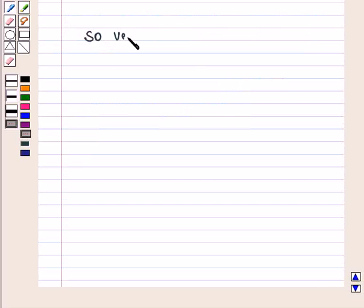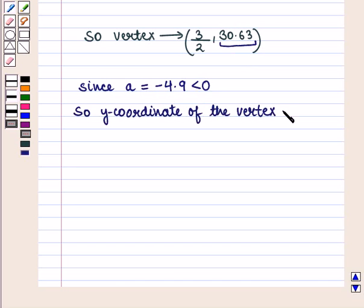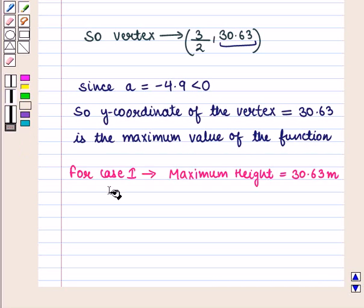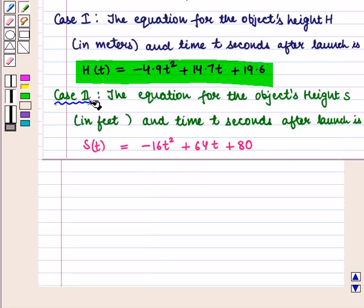So the vertex is the ordered pair (3/2, 30.63). Since a = -4.9, which is less than 0, the y-coordinate of the vertex, which is 30.63, is the maximum value of the function. Therefore, for Case 1, the maximum height is 30.63 meters.